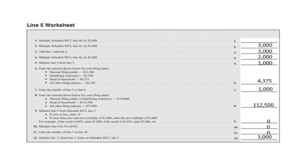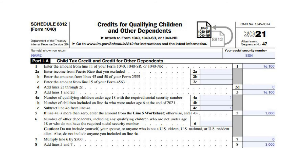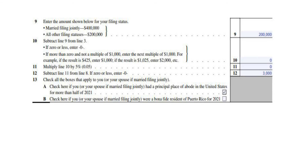We will enter this amount on Line 5 of the 8812. Line 6 will be left blank as you don't have any other dependents. Thus, Line 7 will be $0. On Line 8, add Lines 5 and 7 which will be $3,000. Line 9 will be $200,000 from the table to the left. On Line 10, subtract Line 9 from Line 3, which will be $0. Thus, Line 11 will be $0. On Line 12, subtract Line 11 from Line 8, which will be $3,000.